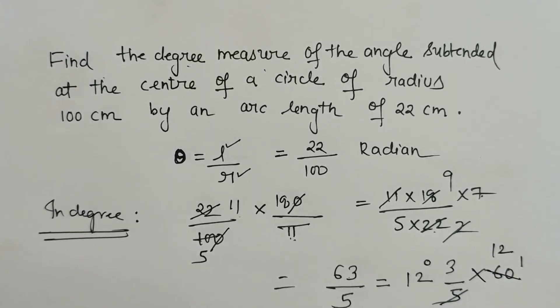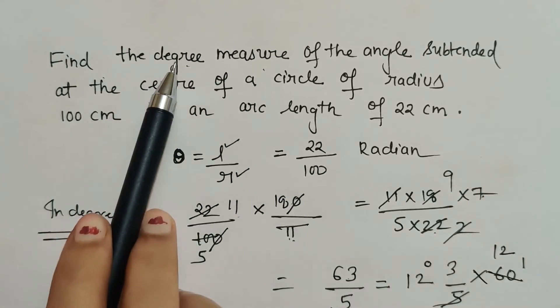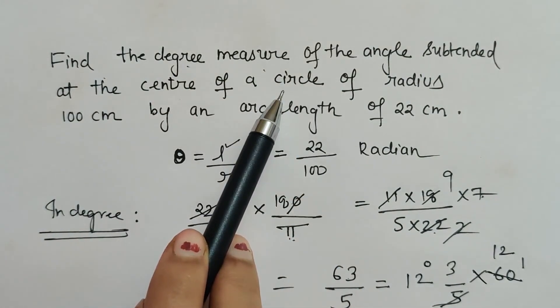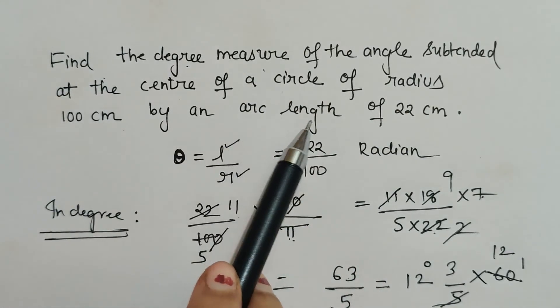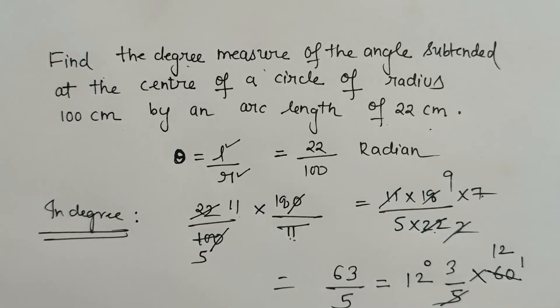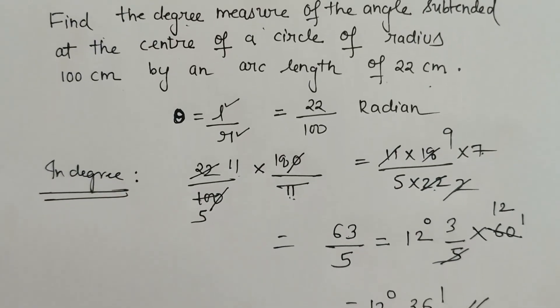So the degree measure of the angle subtended at the center of a circle of radius 100 centimeters by an arc length of 22 centimeters is 12 degrees 36 minutes.